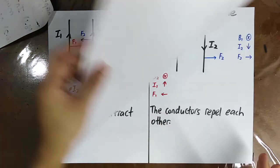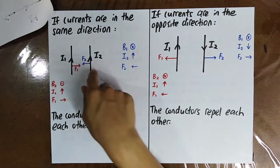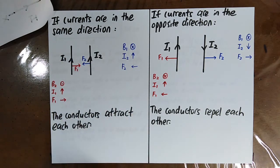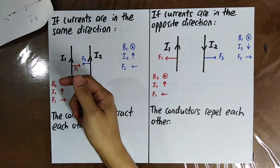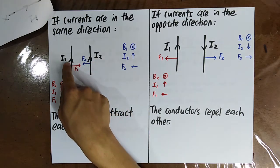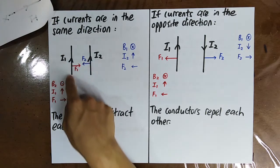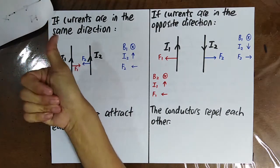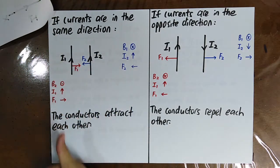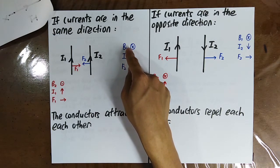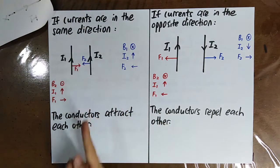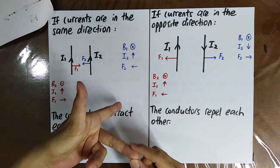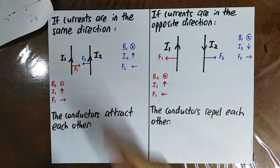Now let's examine why currents in the same direction cause attraction, using Fleming's Left Hand Rule (FBI). The magnetic flux density caused by wire I1 at the region of wire I2 is into the page, determined by the right-hand grip rule. Since B is into the page and I2 is going upward, applying FBI gives the force F2 directed toward wire I1 — an attractive force.